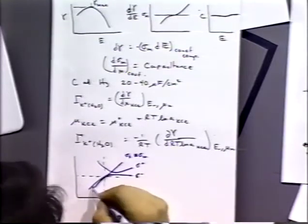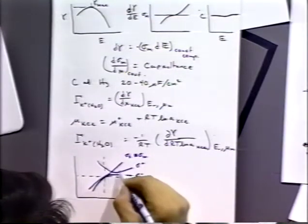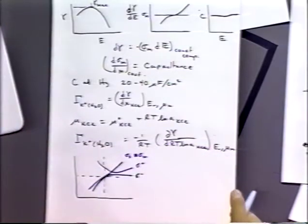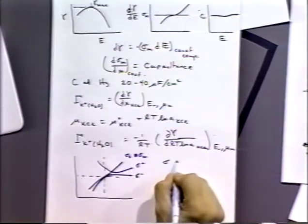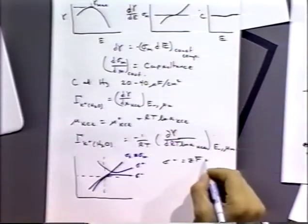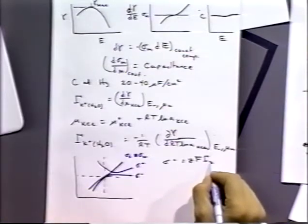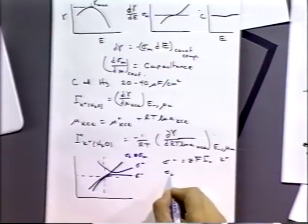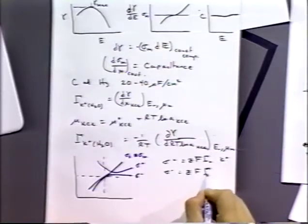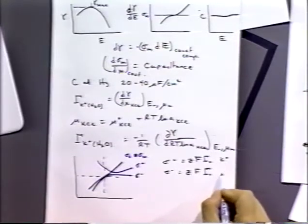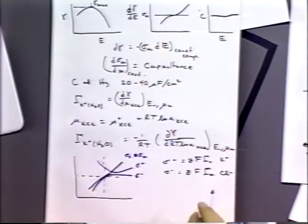And so this would be the net charge on the electrode, but then we can break that down into the ionic components of that surface excess. And so in this case, sigma plus is just going to be equal to ZF times the amount specifically absorbed of that species, and so it might be potassium ions. And sigma minus would be equal to ZF times the specifically absorbed amounts of the anion chloride.